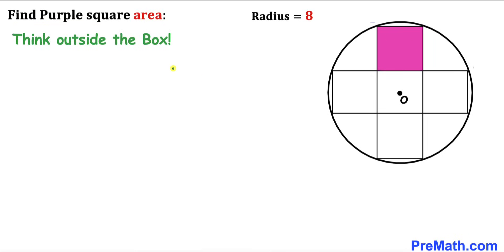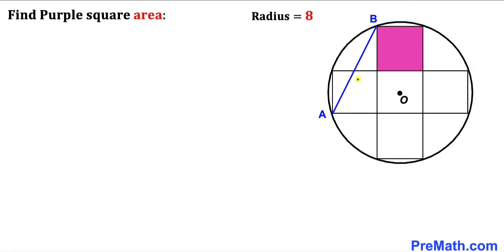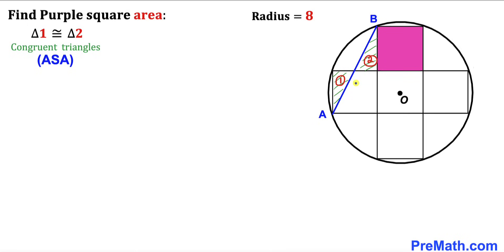We are going to think outside the box and draw some auxiliary lines. We are going to connect points A and B, as you can see in this next diagram, and now let's focus on these two shaded right triangles. Let me label this triangle as number one and this triangle as number two.